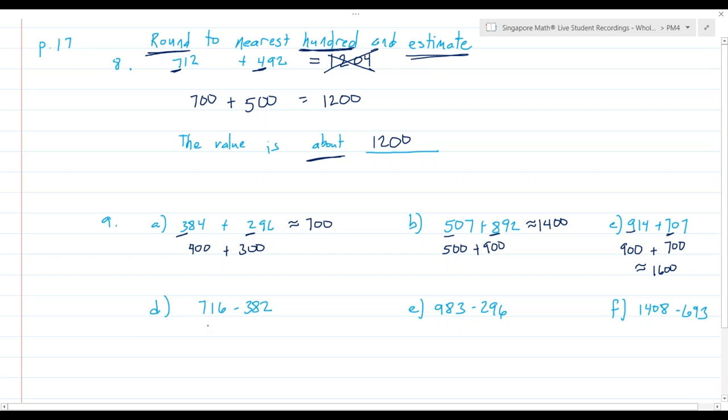Now we're going to do some practice doing the same thing with subtraction. Works out the same. 716 rounds to 700. 382 rounds to 400. When I subtract, I find that it's approximately 300. 700 minus 400 is 300.